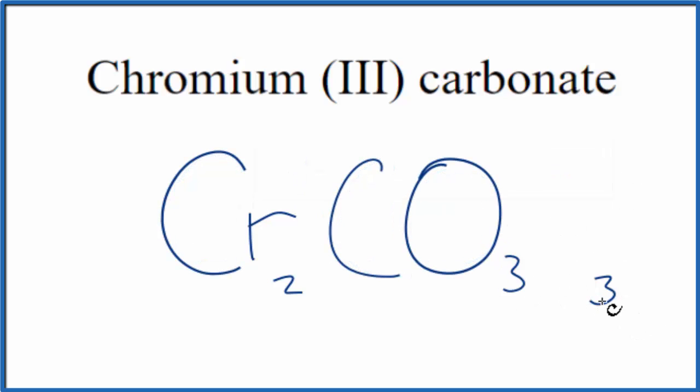and then we need to show that we have 3 carbonate ions, and each one is 2 minus, so we'll put parentheses around our carbonate ion. And this is the formula for chromium 3 carbonate, Cr2, CO3, 3.